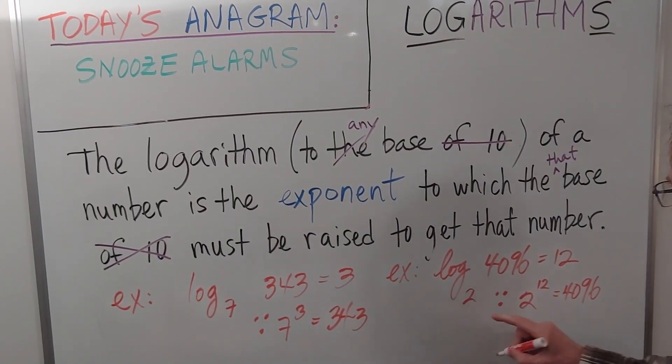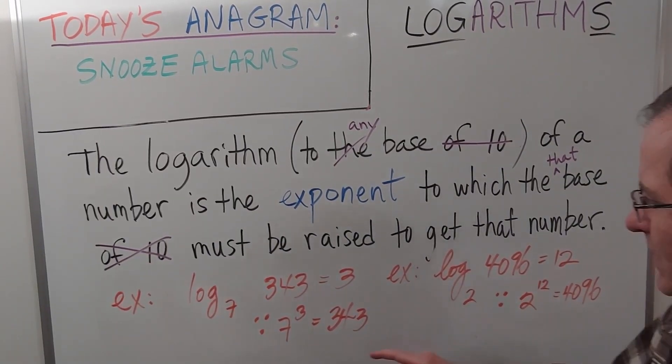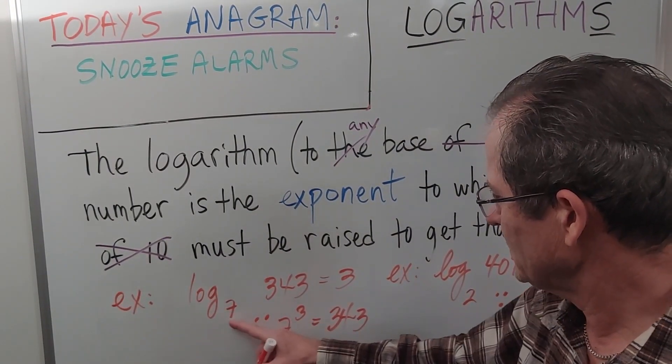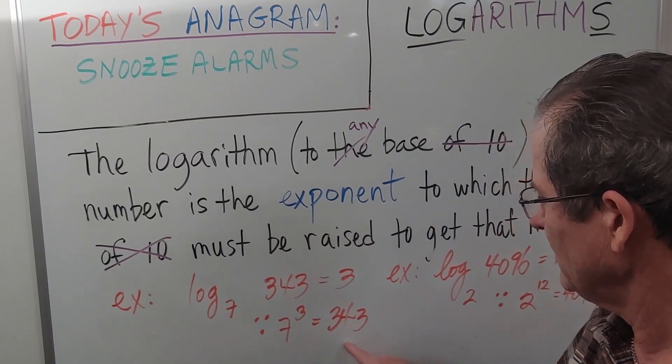The base was 2, must be raised to give that number. And over here, 3 is the exponent to which the base of 7 must be raised to give that number.